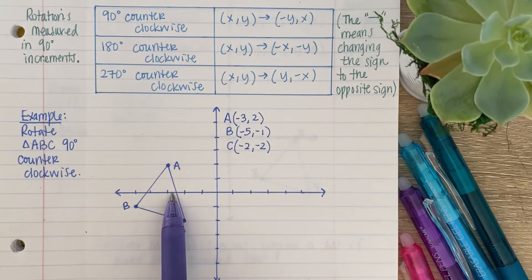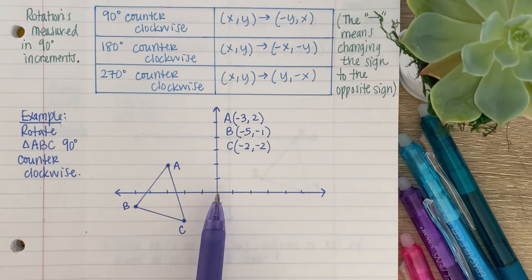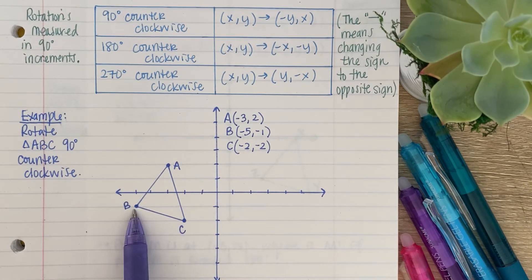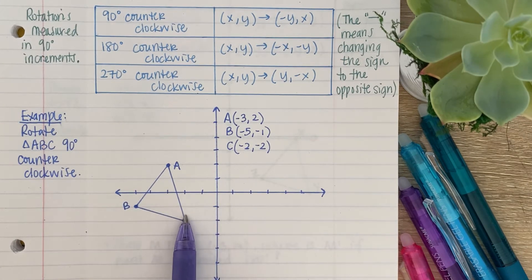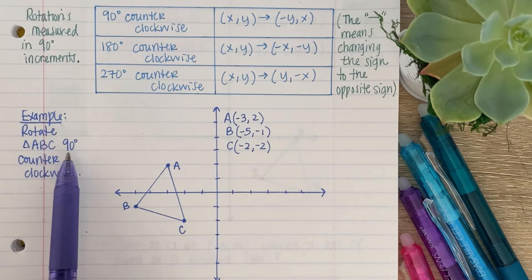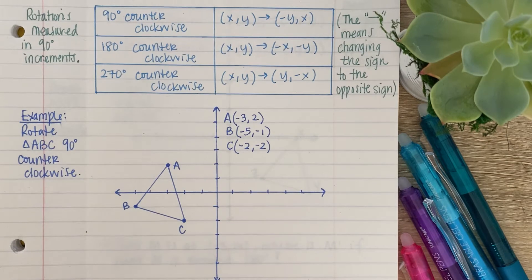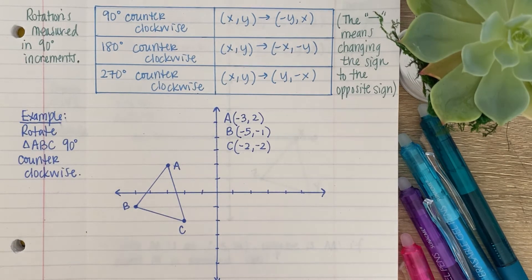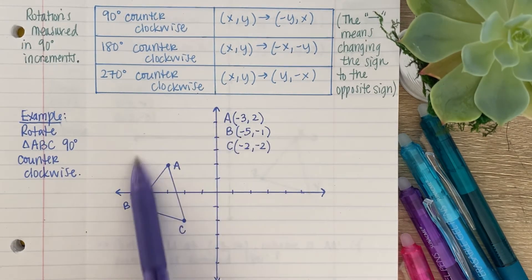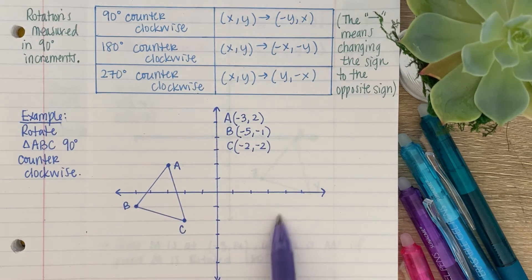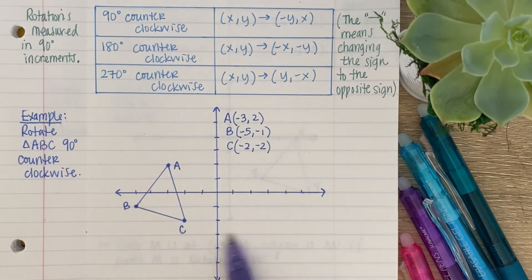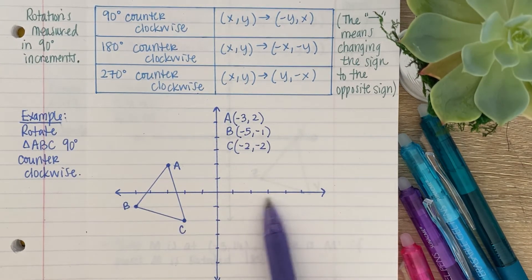So here's our triangle ABC. Point A is at (-3, 2). Point B is at (-5, -1). And point C is at (-2, -2). Now, our example states, rotate triangle ABC 90 degrees counterclockwise. So, you know that we're going this way because this is counterclockwise. So you know that our figure is going to be somewhere over here in this section.